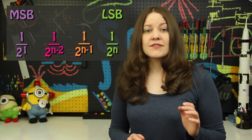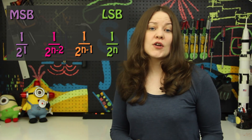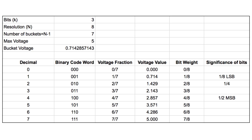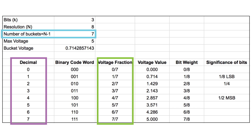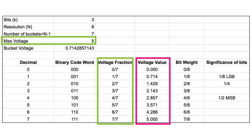The most significant bit is the value furthest to the left, and it's given a weight of 1 over 2 raised to the 1. The least significant bit is given a weight of 1 over 2 raised to the n. This means the most significant bit is always going to be 1 half, and the next one will be a quarter, then an eighth, then a sixteenth, and so on until you reach the last digit in your code. The voltage fraction is the decimal number divided by the number of voltage buckets.